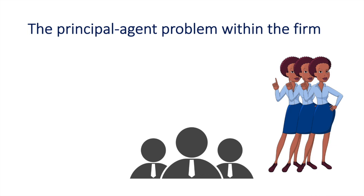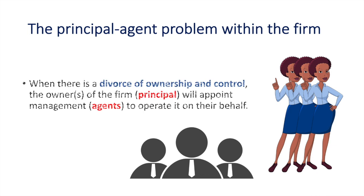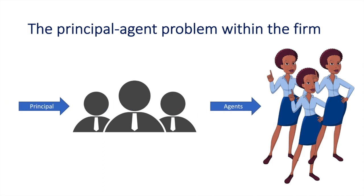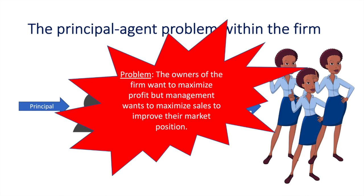Let's look at the principal-agent problem within a firm. If the owners of the firm appoint a board of directors or a management team to act on their behalf, the owners are the principal and the management are the agents. In this case, we have external shareholders who have handed over control to a management team. The problem arises when the owners of the firm want to maximize profit but management wants to maximize sales to improve the company's market position. There could be various reasons for this, such as individuals in management seeking career progression beyond the firm, and having grown a firm in size could be a valuable selling point for them. This assumes that management are paid fixed salaries to operate the firm.